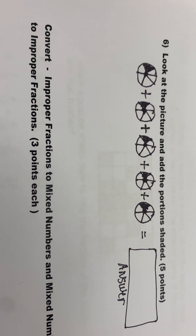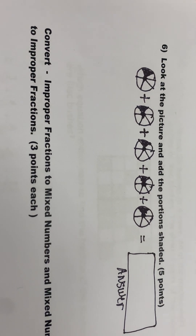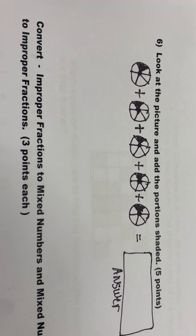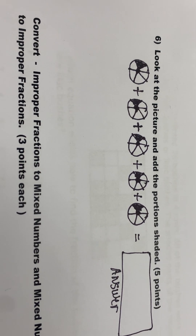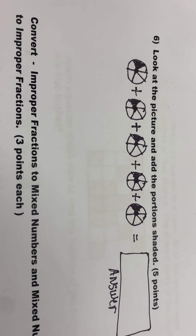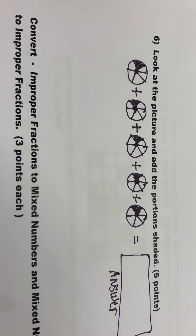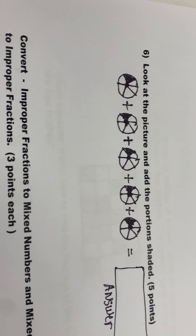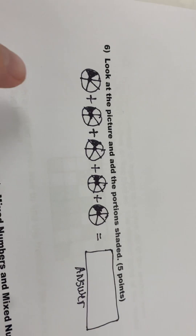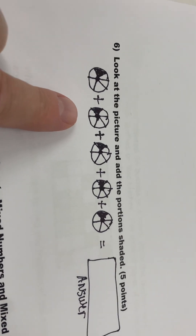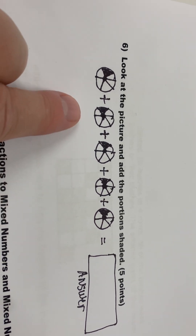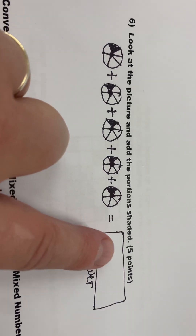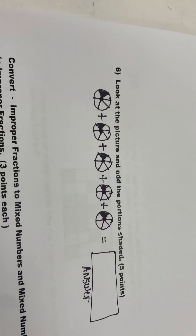Number six — this is sum of the unit fractions. It says look at the picture and add the portions that are shaded. Put your answer in the box.